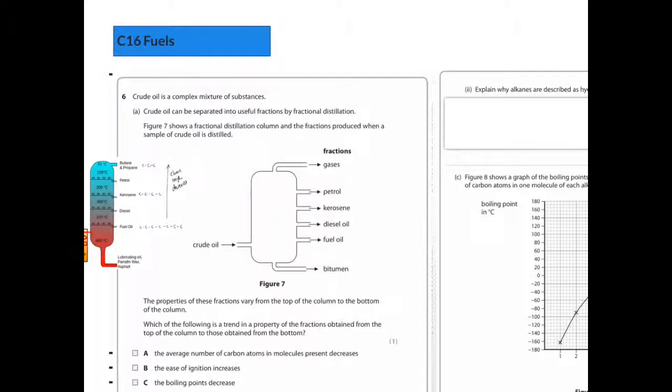Crude oil is a complex mixture of substances. Crude oil can be separated into useful fractions by fractional distillation. Figure 7 shows a fractional distillation column and the fractions produced when a sample of crude oil is distilled.